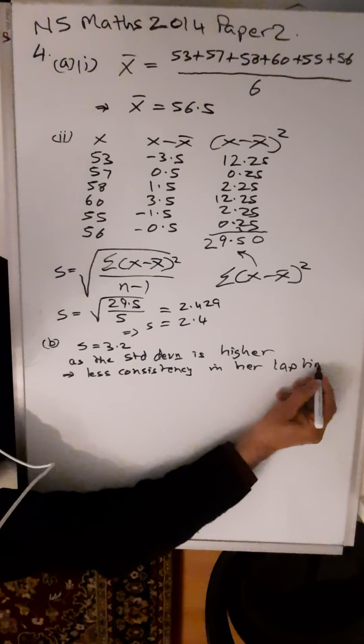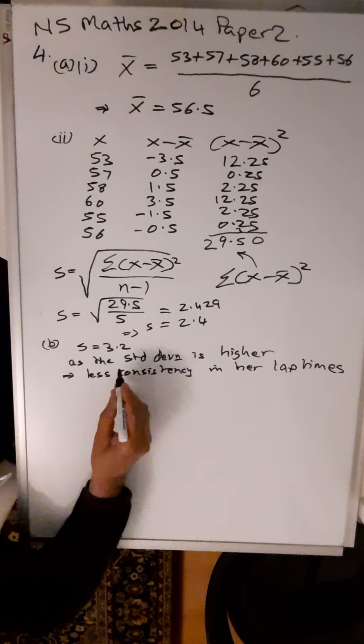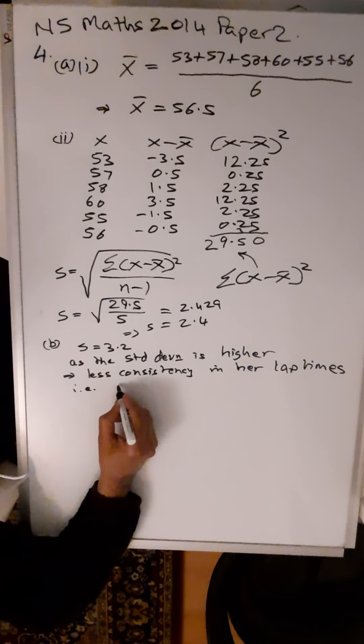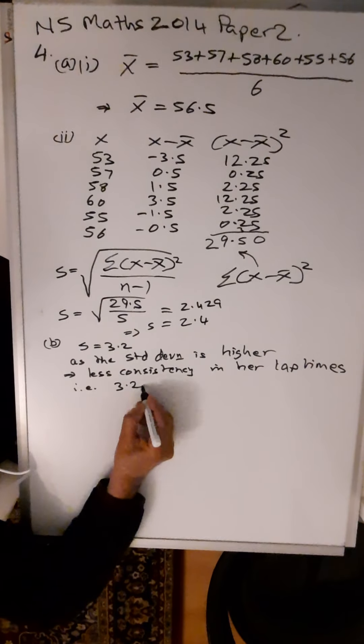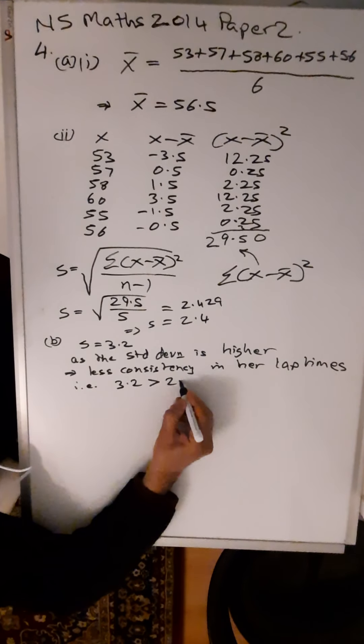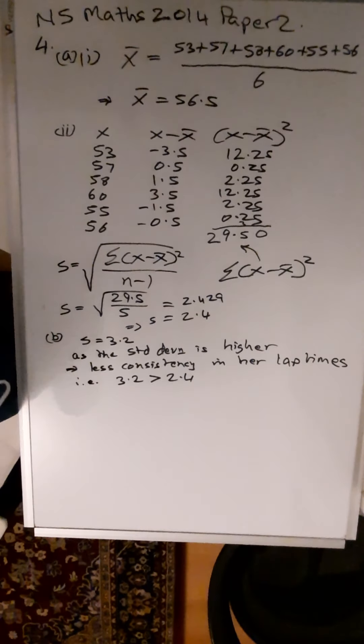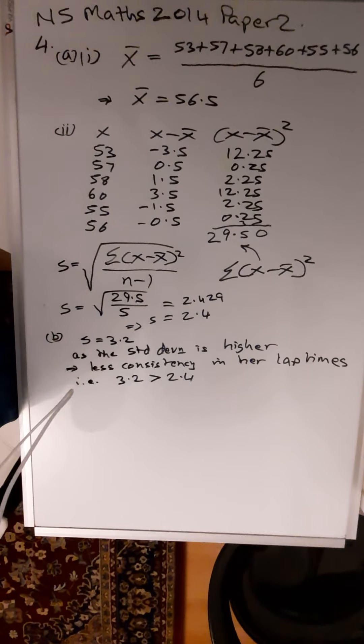So you're only being asked to comment on the standard deviation. Our standard deviation is now 3.2, and our standard deviation before was 2.4. So that means that as the standard deviation is higher, there is less consistency.